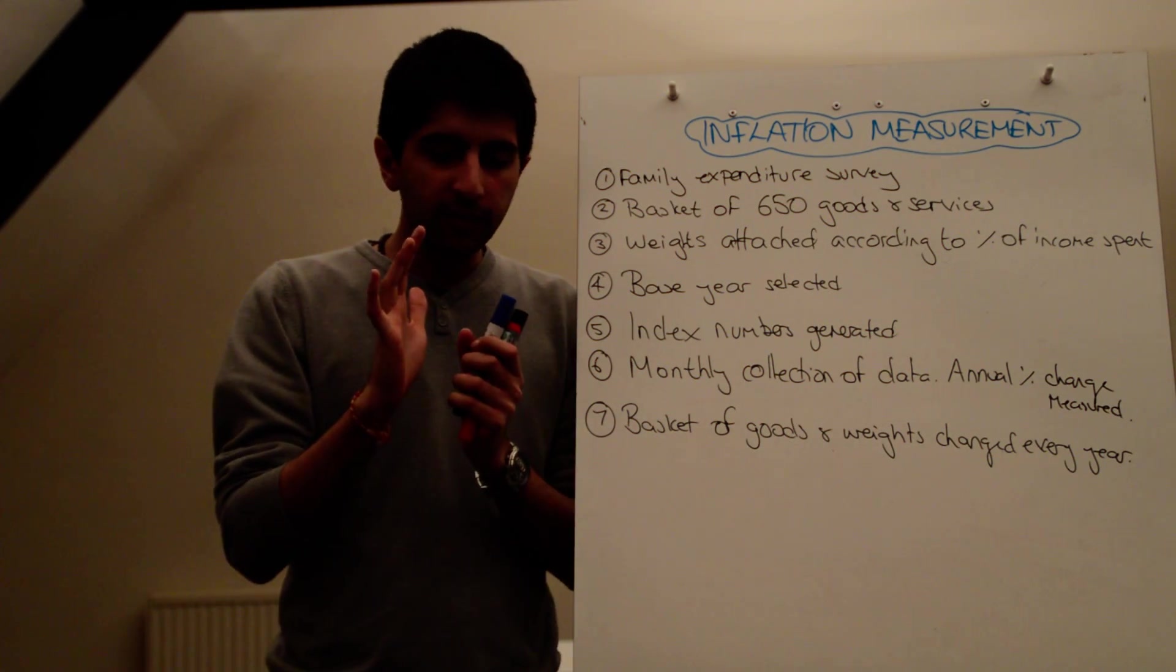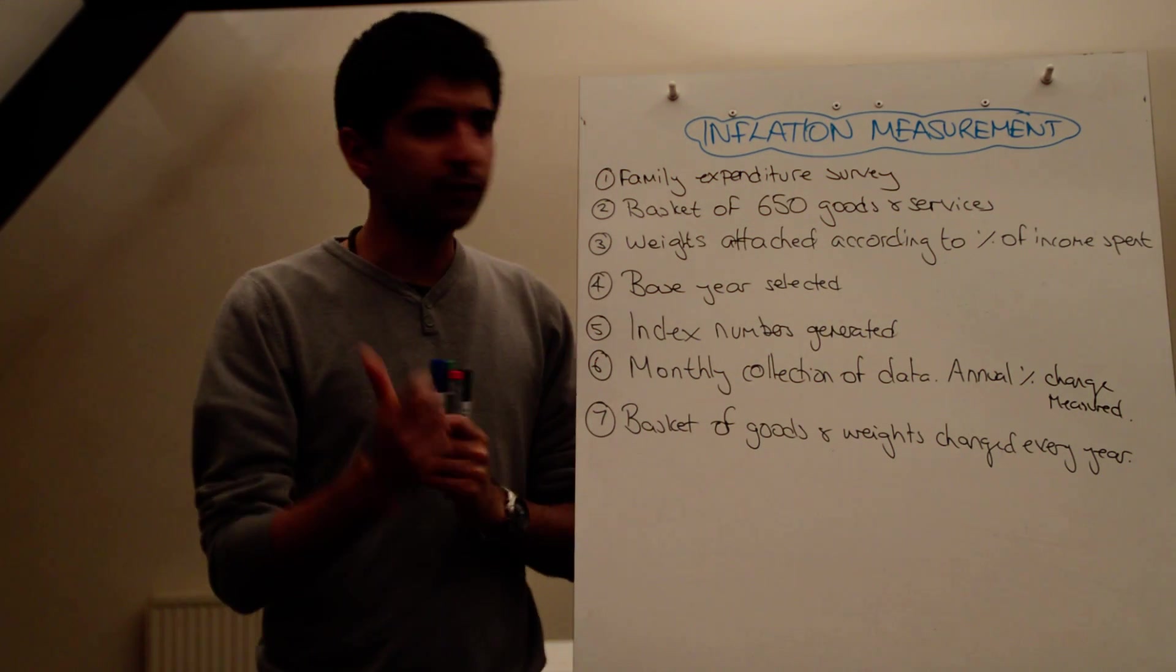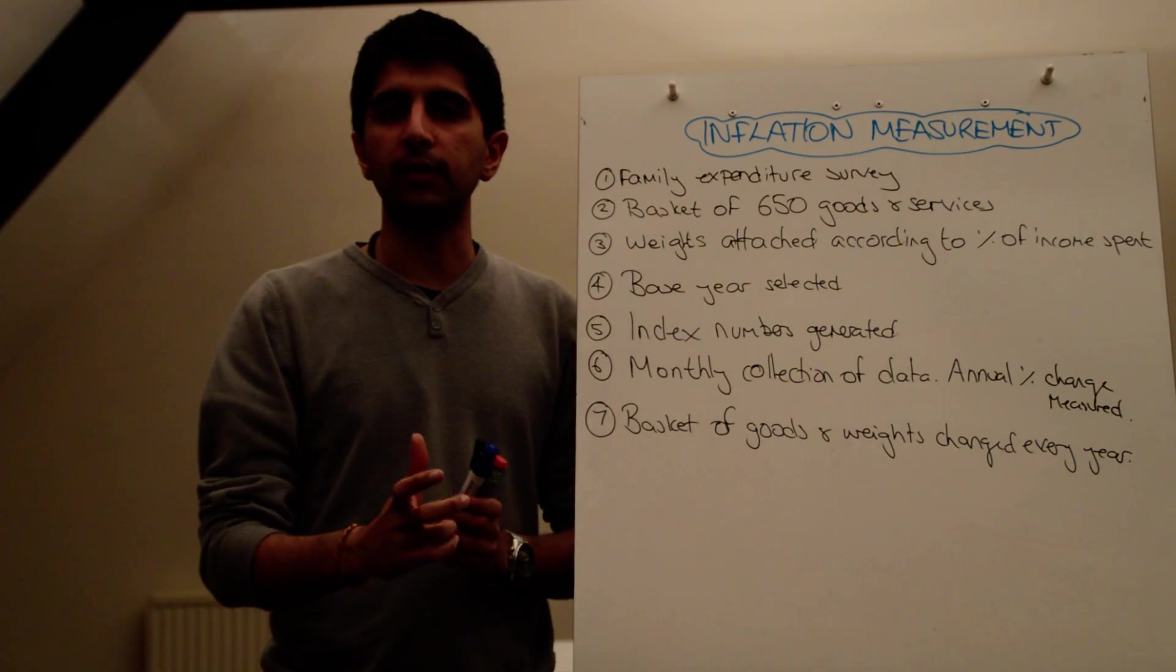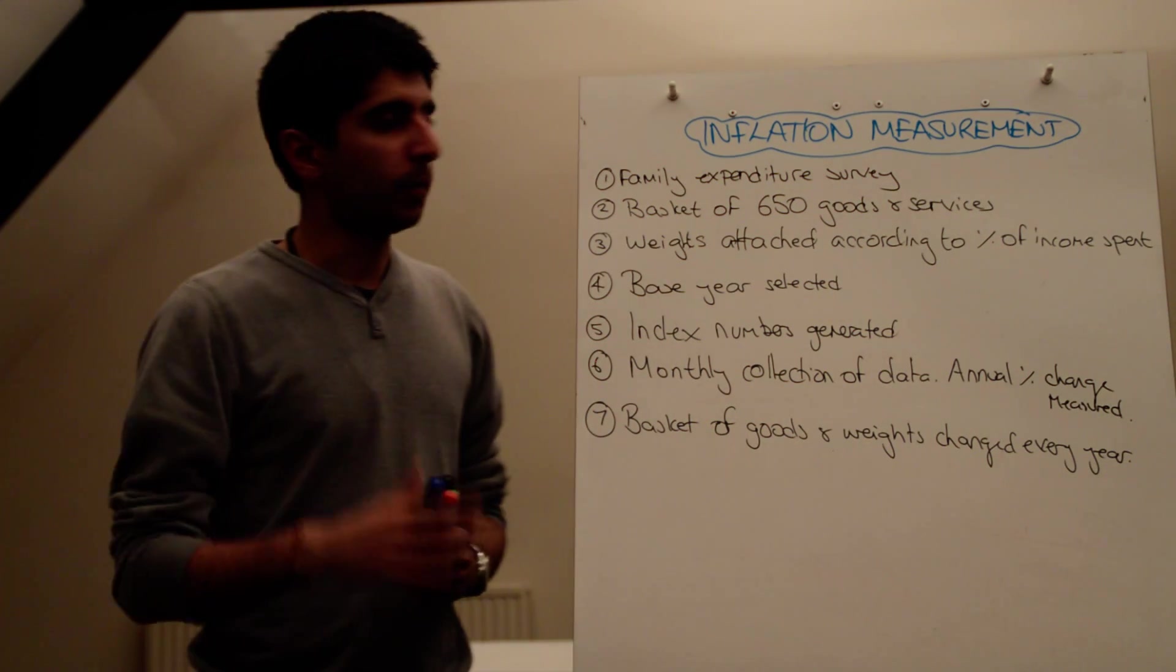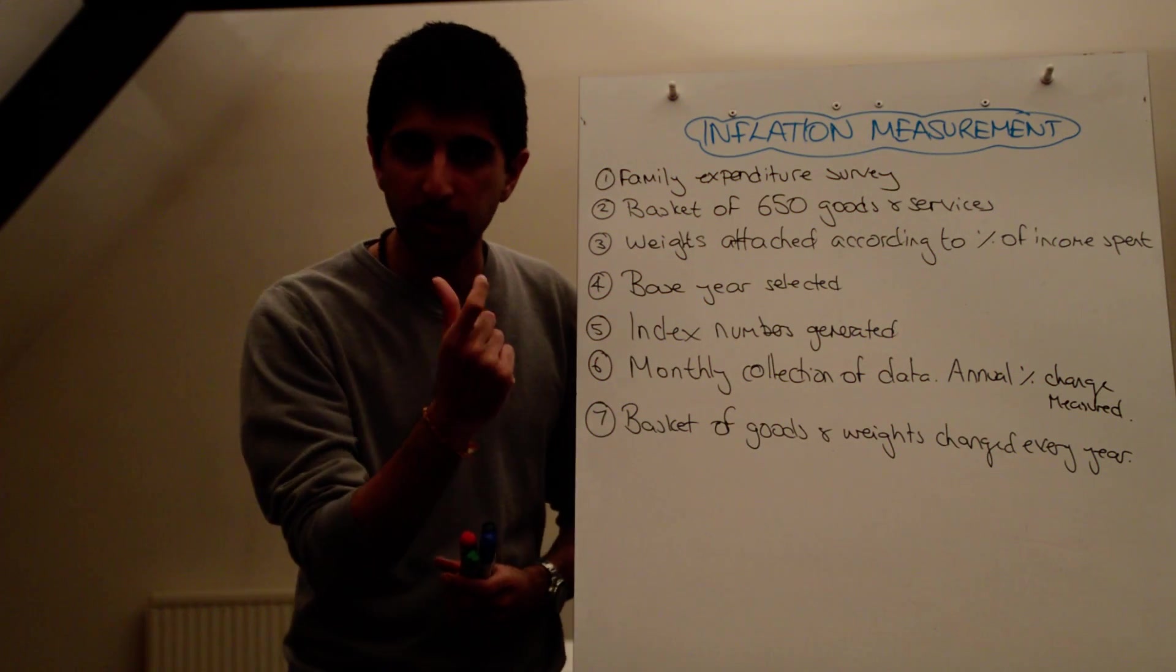But the key measure of inflation that you need to know is the Consumer Price Index. That's the one that governments use in most countries to target inflation. So when we talk about the macro objective of government being low and stable inflation, we're talking about CPI inflation.